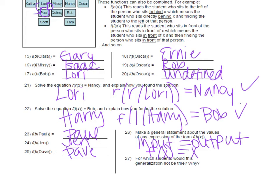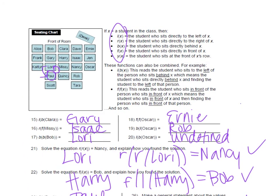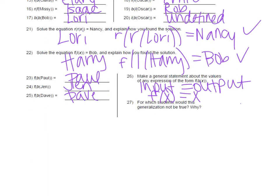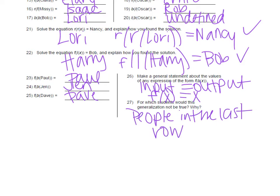Last one: for which students would this generalization not be true? So who could you not go behind? Because that's your first operation — going behind them. What students could you not go behind? That would have to be all the people in the last row who don't have anybody behind them: Caitlin, Scott, Quincy, Tara, and Oscar, because there's nobody to go behind them. So you could write those out or just say people in the very last row.